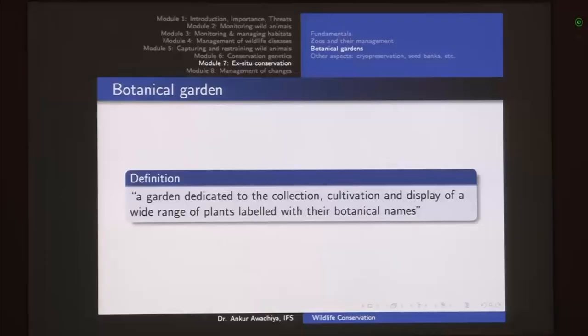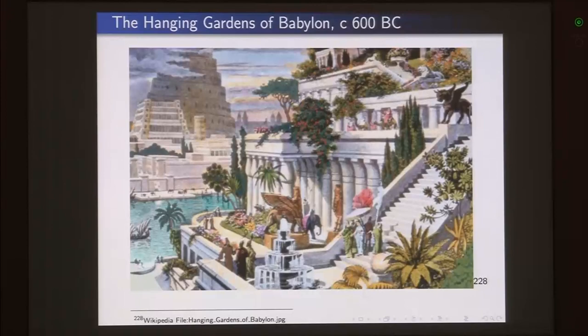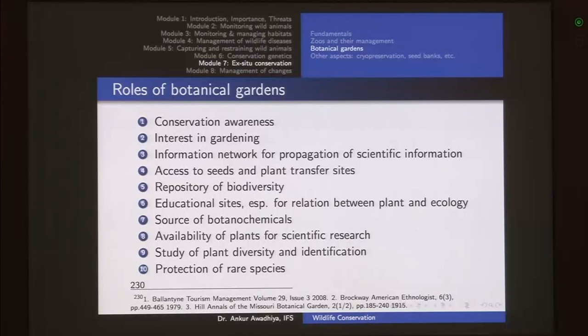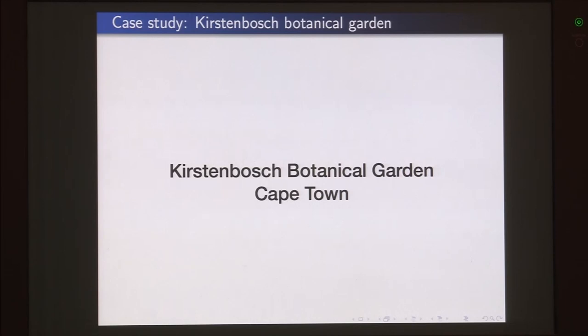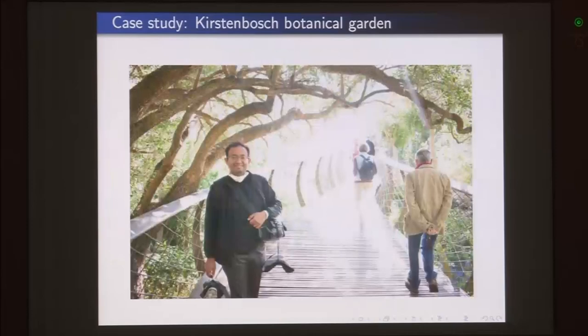Next we had a look at botanical gardens, which are similar to normal gardens but with a lot of scientific information included. Examples of normal gardens include the Hanging Gardens of Babylon and Nishat Gardens of Srinagar. The Kirstenbosch Botanical Garden in Cape Town was examined as a case study, showing how different plants and experiences are offered to make people more tuned to the cause of conservation.